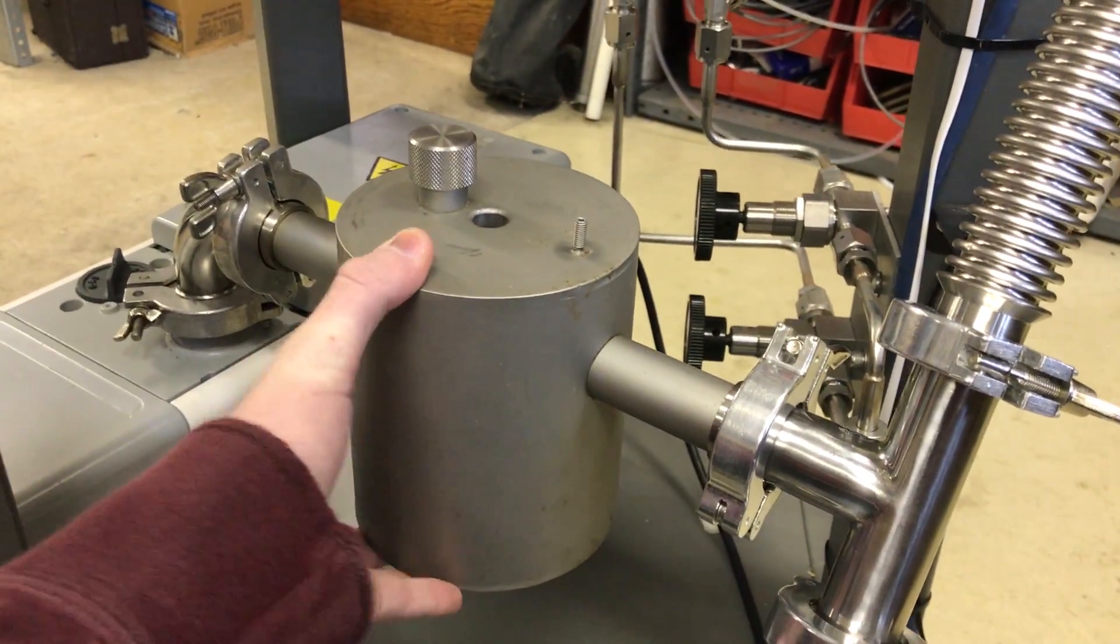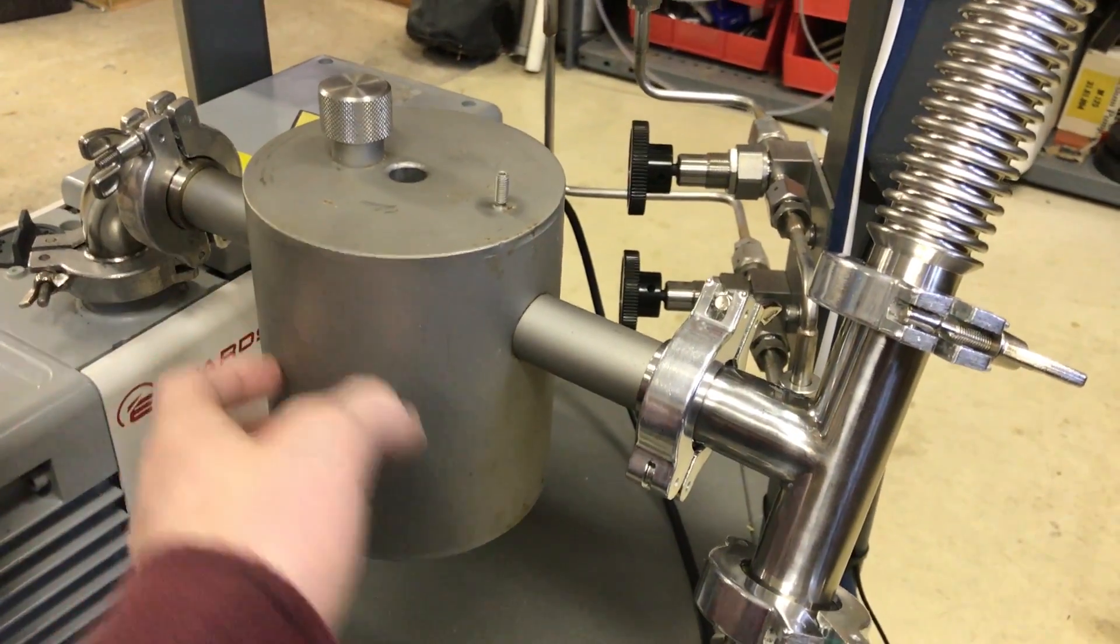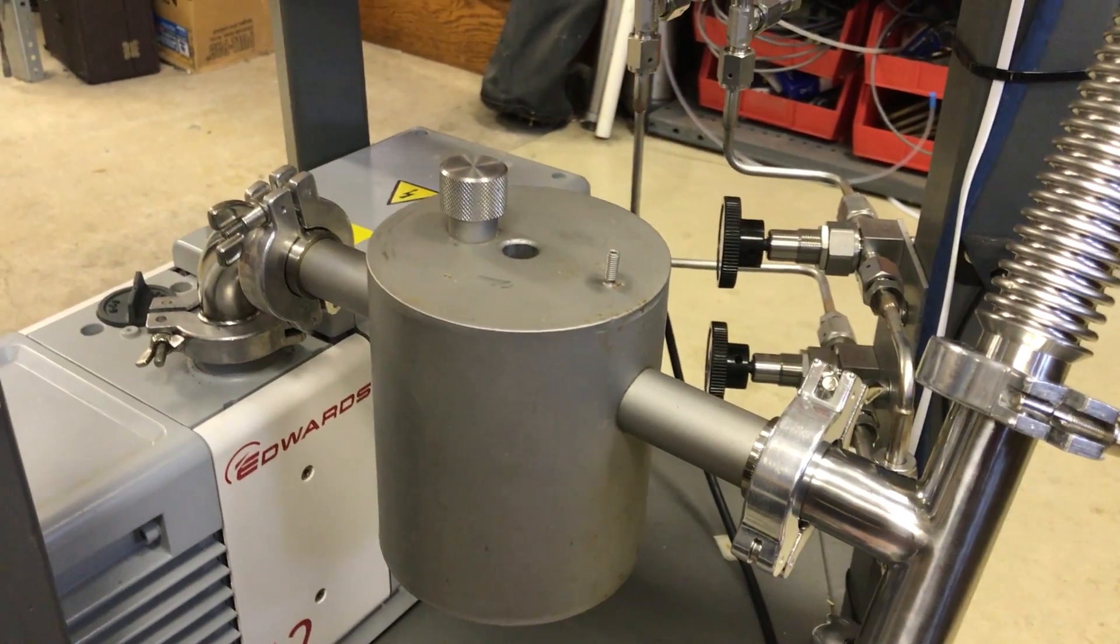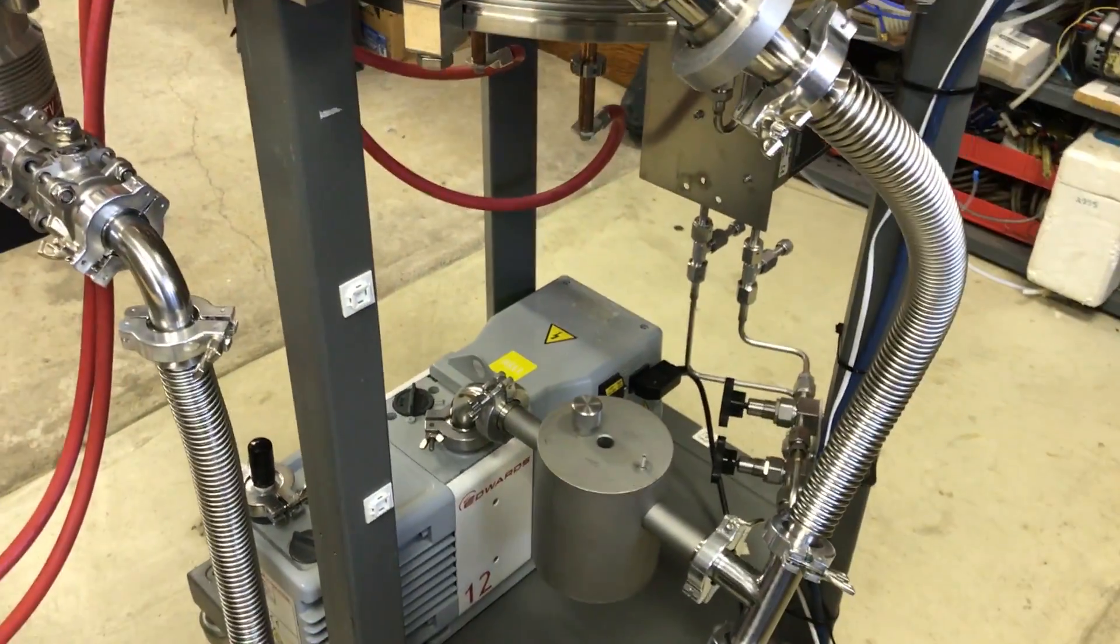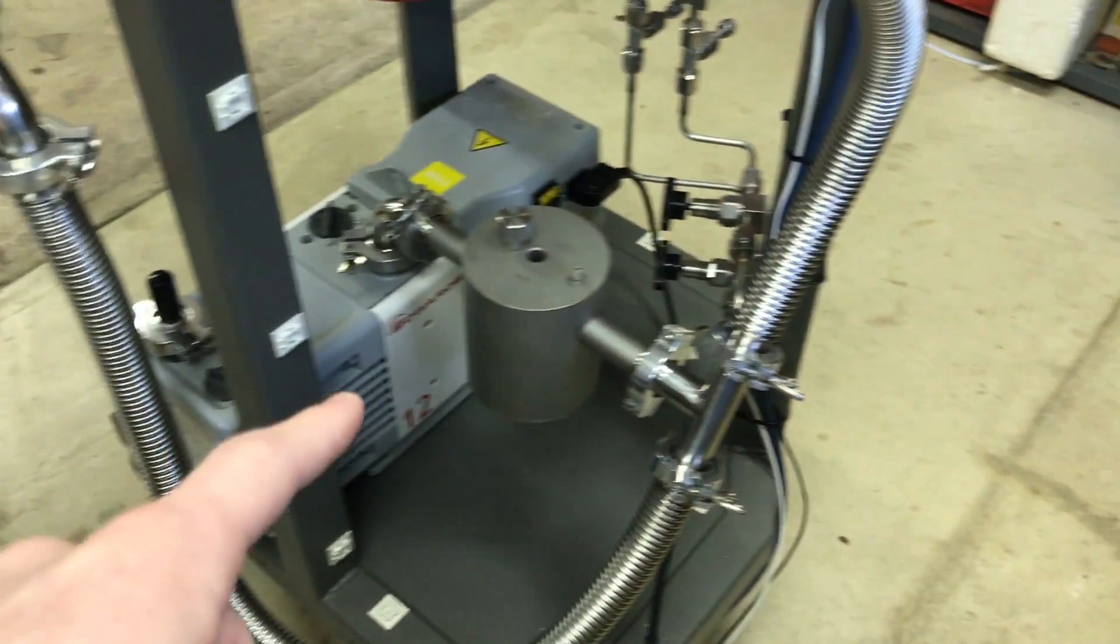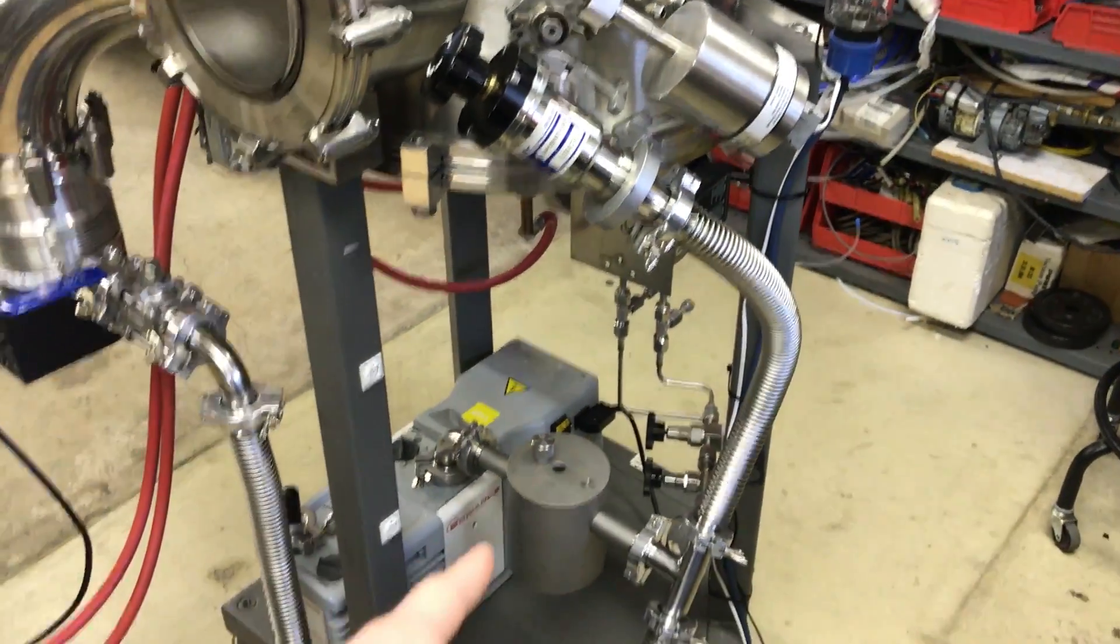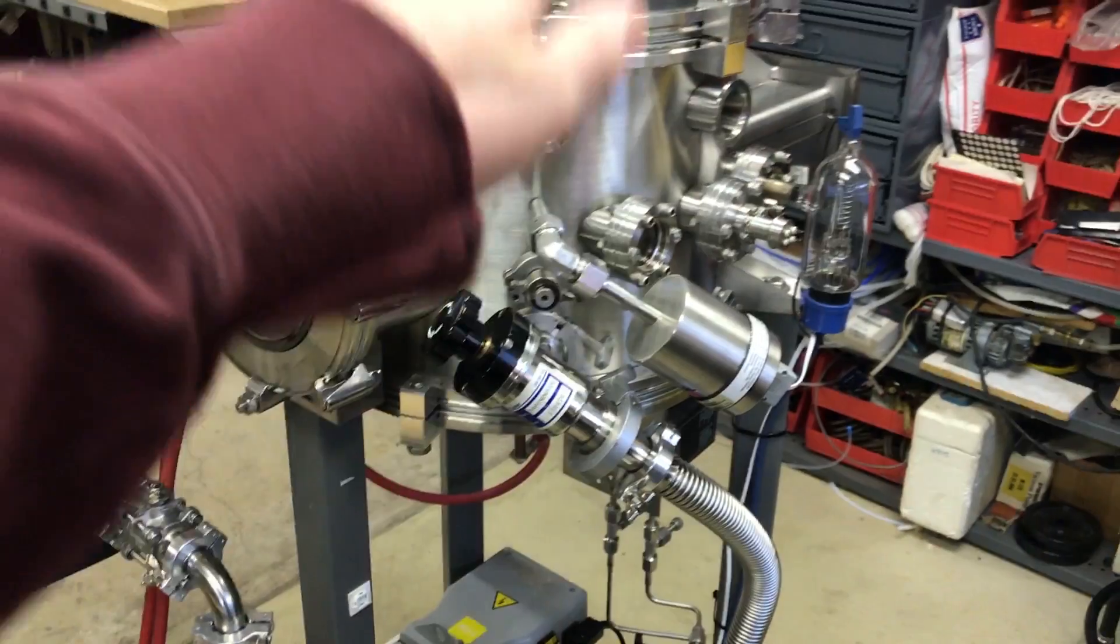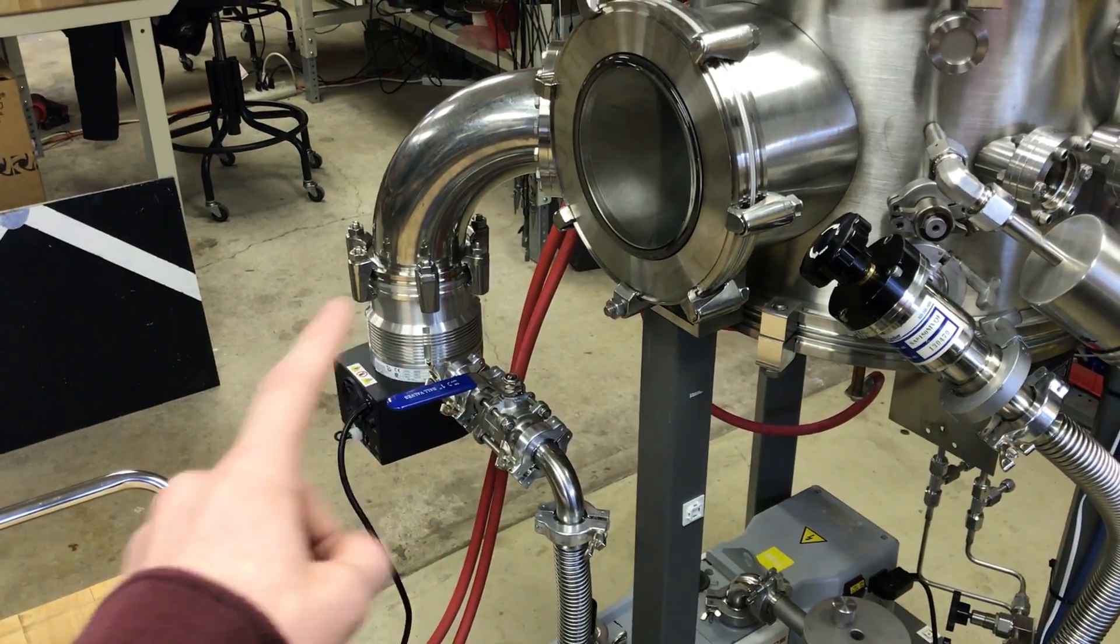This is a foreline trap, and there's a heater, a Watlow heater that goes in there. And it's got desiccant beads in it. And it slows things down a little bit when you're pumping, but it'll help the backstreaming of fluids into your chamber. So I have all the valves set up so that when I want to pump down the chamber initially, I close that valve and open that valve there so that I'm pumping down from the mechanical pump straight to the chamber.